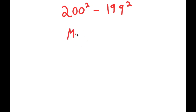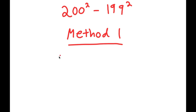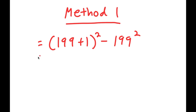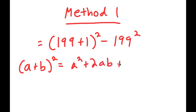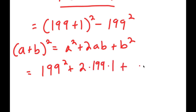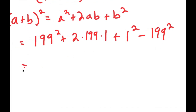So for method 1, what I'm first going to do is rewrite 200 squared as 199 plus 1 squared. So now I get 199 plus 1 squared minus 199 squared. And from here, I can use an algebraic property that states that if I have something in the form a plus b squared, this is equal to a squared plus 2ab plus b squared. So 199 plus 1 squared I'm going to write as 199 squared plus 2 times 199 times 1 plus 1 squared, and at the end I have minus 199 squared.